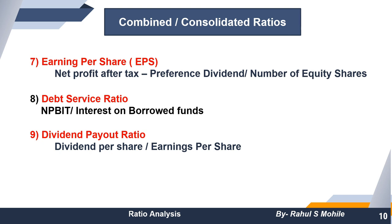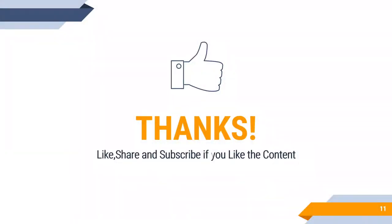Last is dividend payout ratio. The formula is dividend per share divided by earning per share. If you invest in the stock market, dividend payout ratio is very important to observe. Dividend payment is always calculated on face value. So we have learned three types of ratios: balance sheet ratios, income statement (profit and loss) ratios, and consolidated or combined ratios. In the next lecture we will revise the format and start with practical questions. Thank you very much, bye-bye, take care.